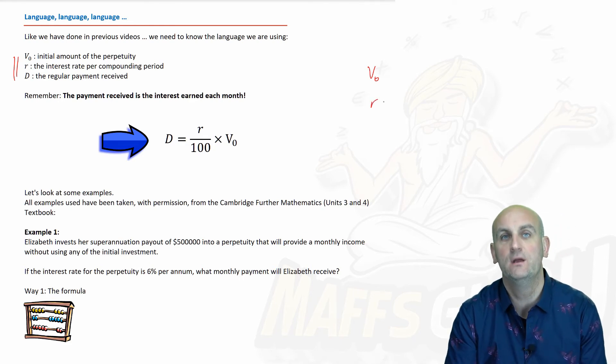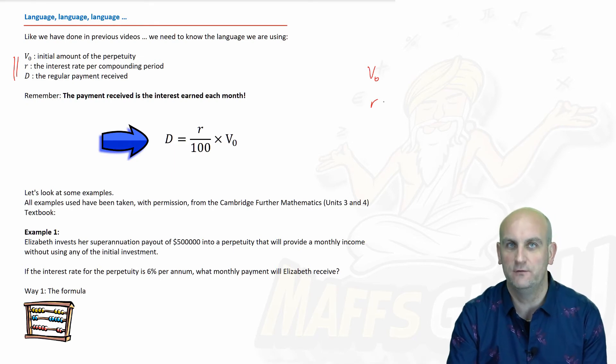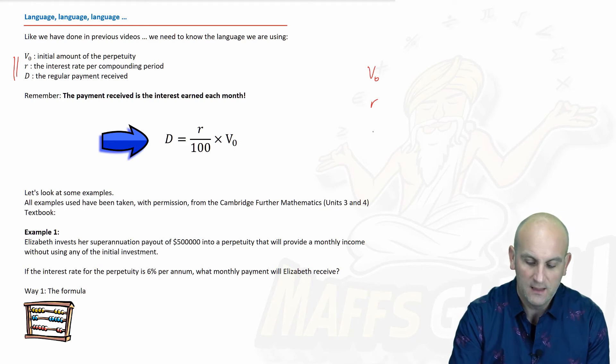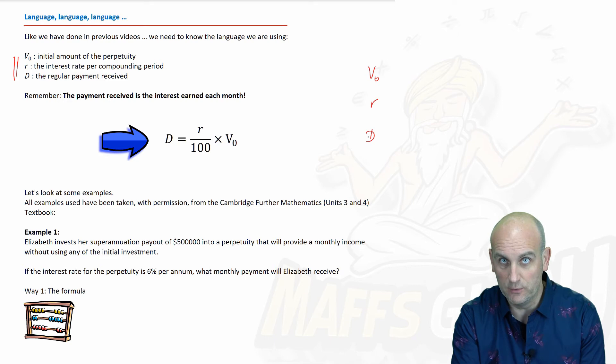Every bank account we ever go to hopefully is going to give us interest, right? That's the whole point of loaning the bank our money—they use it but give us a little bit of a thank you, and that thank you is called interest. This value of D is basically the money you're going to get each month or each year depending on when the perpetuity pays out. That's the important thing.